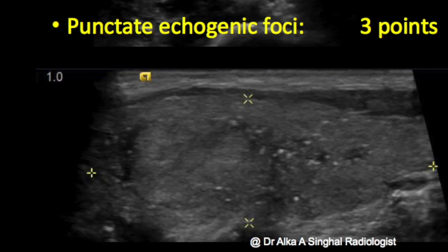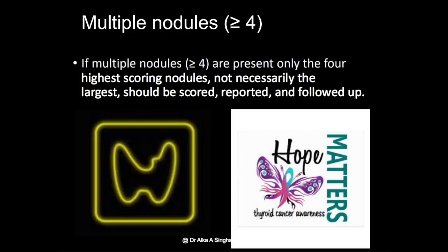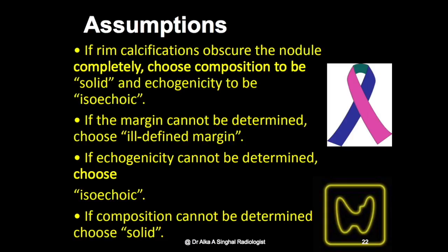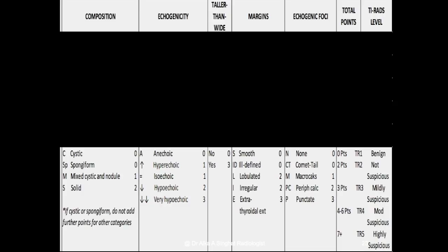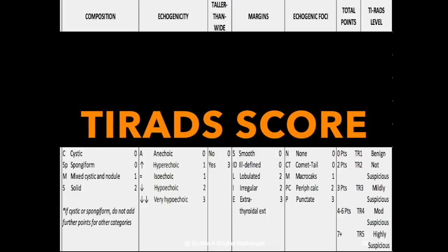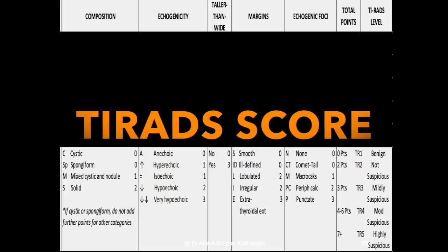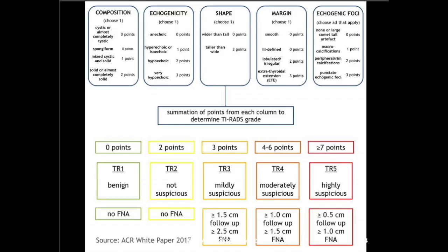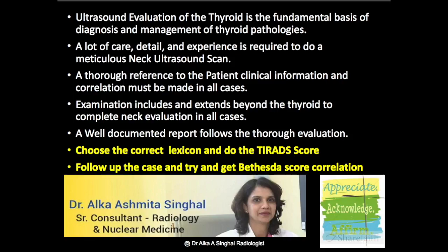Putting all these scores together, we calculate the TI-RADS score. If there are multiple nodules — more than four — we select the four highest-scoring nodules and follow them up. If rim calcifications obscure the nodule, we choose composition as solid and echogenicity as isoechoic. If margins cannot be determined, choose ill-defined. If echogenicity cannot be determined, choose isoechoic. If composition cannot be ascertained, choose solid. We then enter the size, location, composition, echogenicity, taller than wide, margins, echogenic foci, total score, and TI-RADS level into a chart. Based on this TI-RADS chart, we decide whether to perform FNA or follow up by size criteria. I follow up these cases and obtain Bethesda score correlation, which further improves my learning and accuracy.